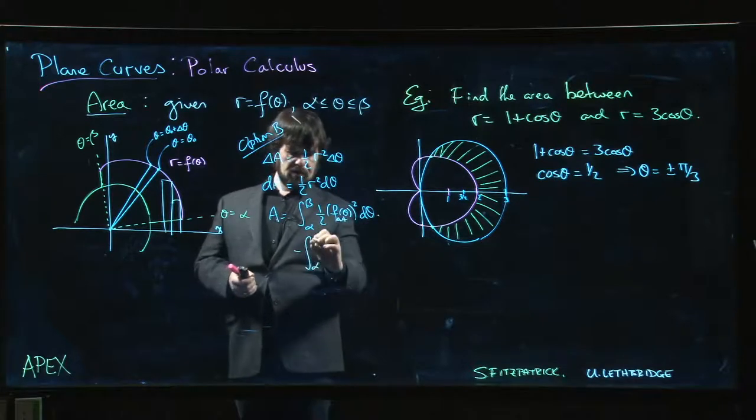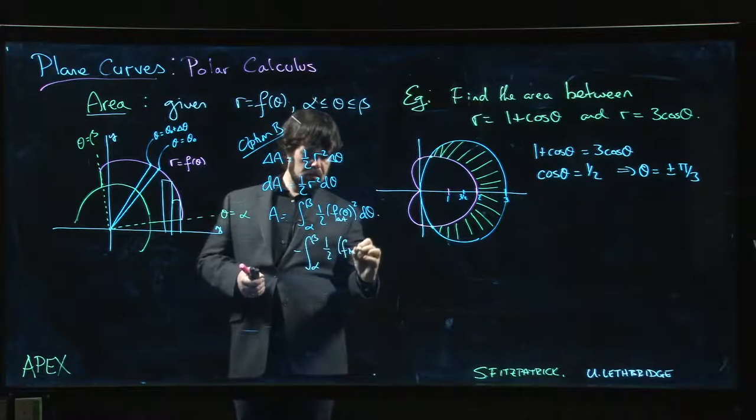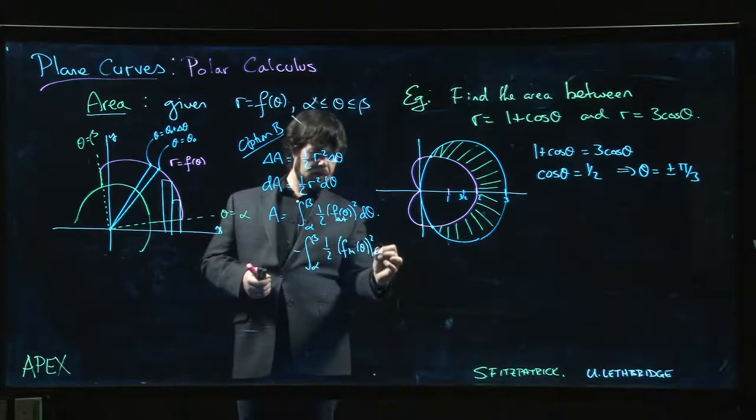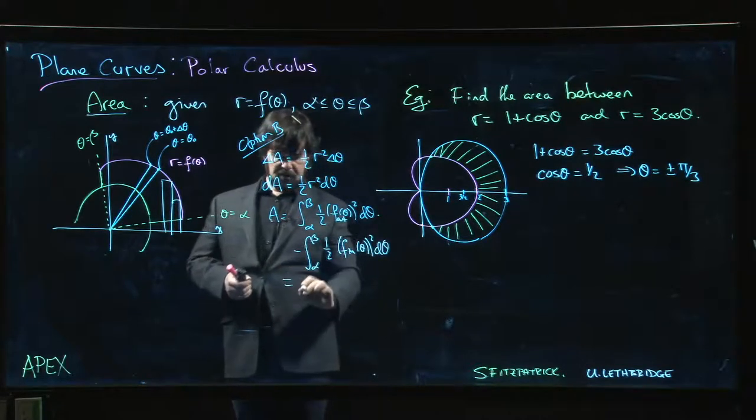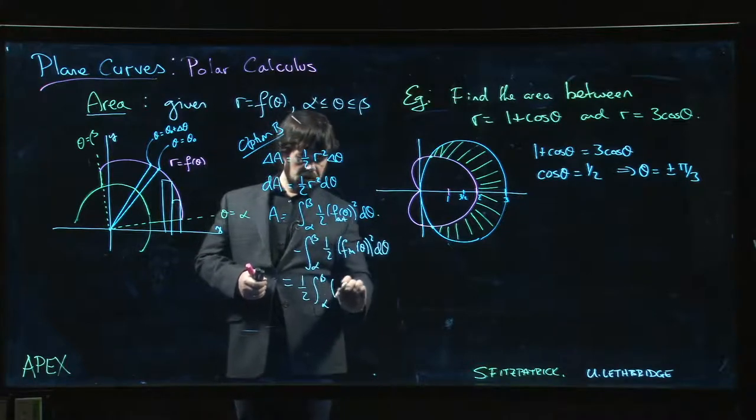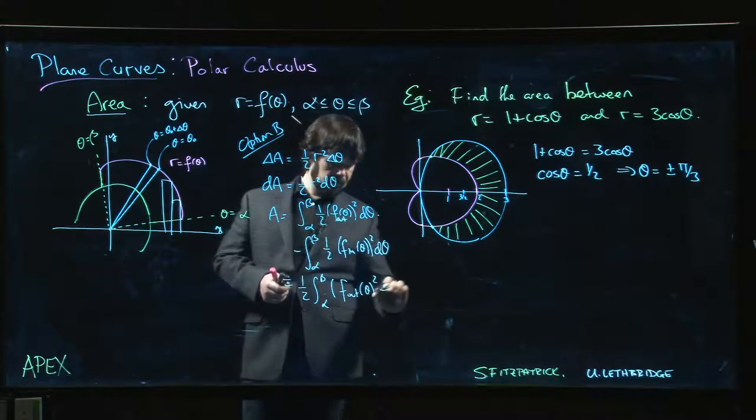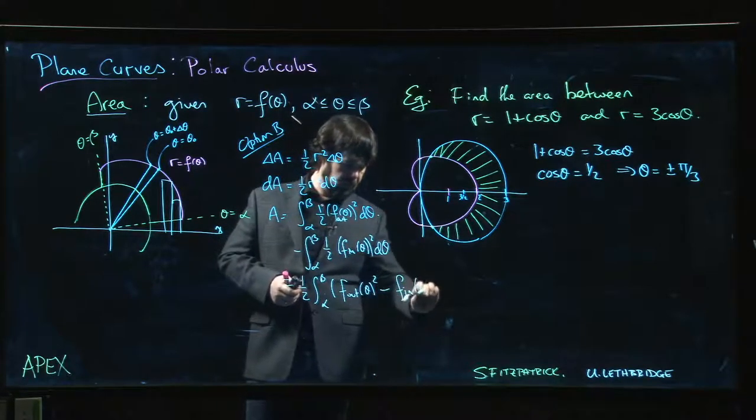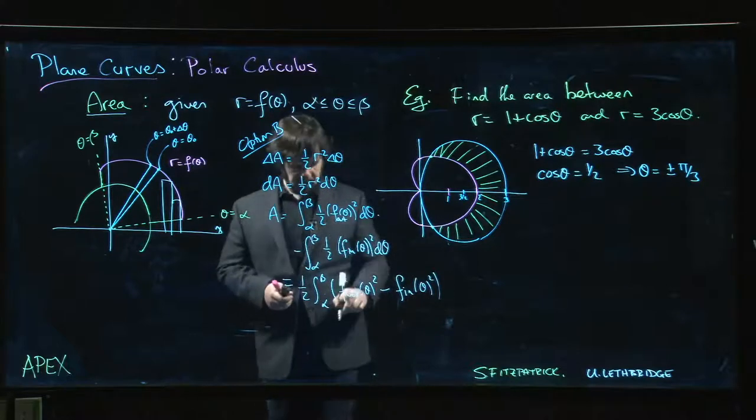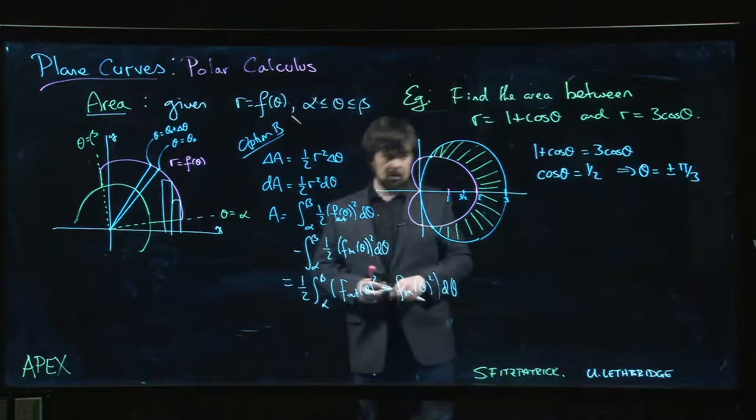and then we're going to subtract off the area of the inner one, what you get is going to be half the integral from alpha to beta of the outer curve squared minus the inner curve squared. So f out squared minus f in squared. That's what we want to integrate here.